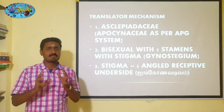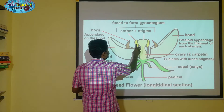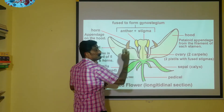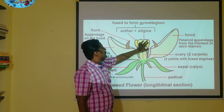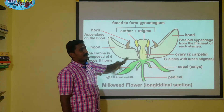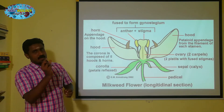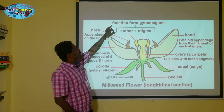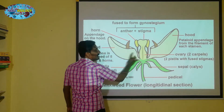Gynostegium is a small but important structure. Here is the anther — in the tip region there is a pollenium structure. If you look at the stamen, the anther forms a gynostegium. The anther and stigma are fused together to form the gynostegium. The filament is free.